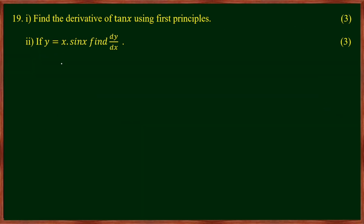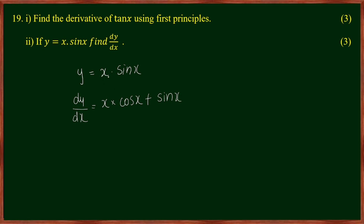The next question: if y = x·sin x, find dy/dx. Using the product rule: derivative of first function times second plus second times derivative of first. So dy/dx = x·cos x + sin x.